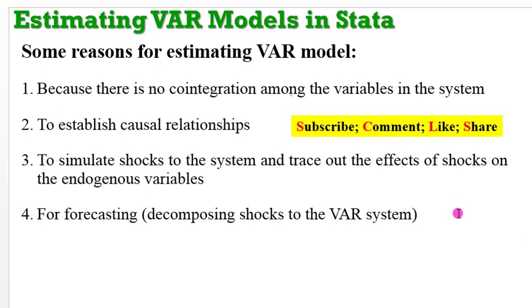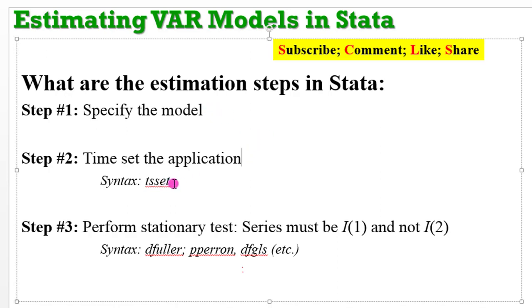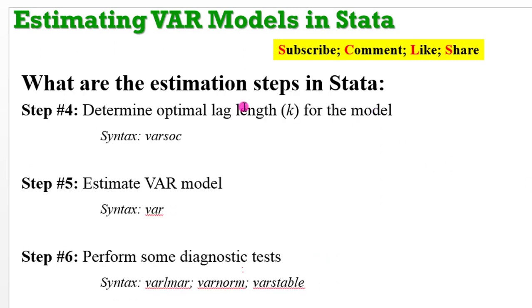All these reasons can be given for estimating a VAR model. Here's a recap again on how to go about it in Stata. Make sure you specify the model correctly. I've shown you an example of the one I'm using. You can copy mine and just modify to suit your study. Make sure you time-set your application using the command tset. If you don't do it, Stata will not run your time series analysis. First thing, perform stationarity tests. Ensure that the series are all integrated of order one, definitely not order two. You can use any of these tests.